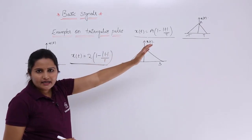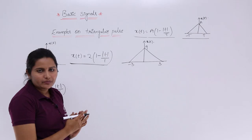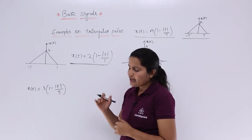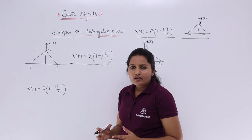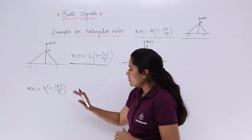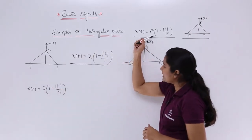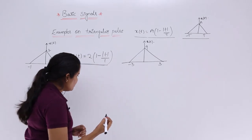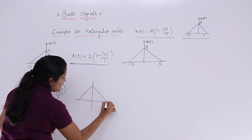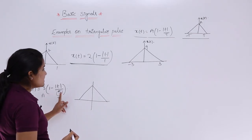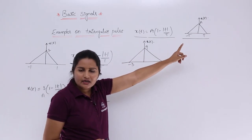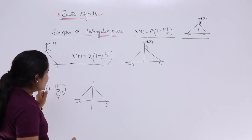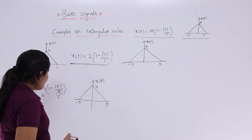In this way, you compare with the standard equation and pick the right equation for a given signal. Similarly, if they give an equation and ask you to find the corresponding diagram, you again compare with the standard one. Here, comparing with the standard equation, 3 indicates the amplitude and 5 indicates the time period. So you draw a triangle with time axis from −5 to 5 and amplitude 3. That is the diagram representing this equation.